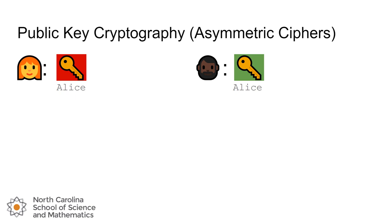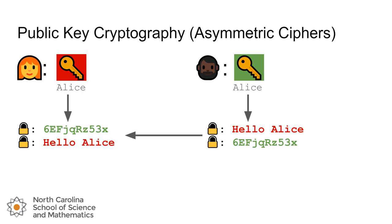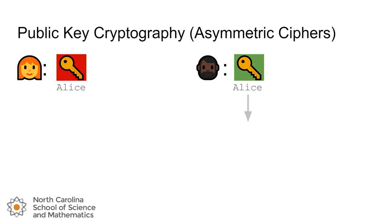Now Bob has Alice's public key and can use it to take his plain text message 'Hello Alice' and encrypt it into cipher text. He'll transmit the cipher text — if Eve is watching, she can see it going across the line, but she won't have access to Alice's private key, just like Bob doesn't. Alice can then take her private key and the cipher text and convert it back into plain text. As a reminder, after Bob encrypts the message with Alice's public key, he can't get back to the plain text even though he created it — you can't undo your own encryption when using somebody else's public key.